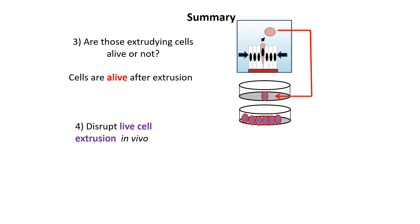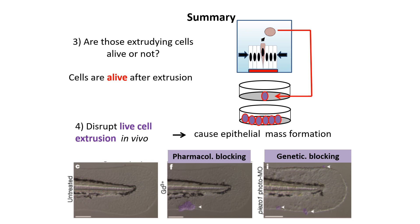The final question of the paper is whether disrupting this process of live cell extrusion in vivo causes epithelial mass formation. They show that in untreated epithelia the tissue is normal. With pharmacological blocking, a mass appears. With genetic blocking — creating a mutation — you start finding neoplastic, abnormal growth in the tissues that mimics what happens during cancer. In summary, this paper showed these four components and has a clear application to studying cancer.